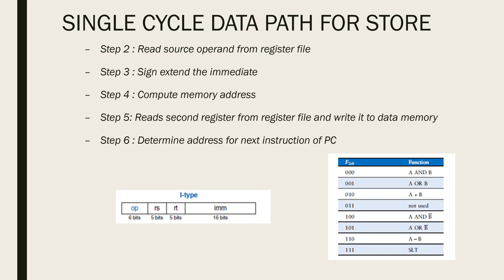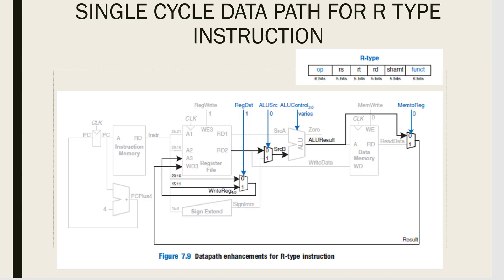Now we are looking at the steps involved during single cycle data path designing for a store instruction. Step 5 will be the extra step that comes in when you compare it with the load instruction. We have also added the general format for an I-type instruction and the truth table for an ALU 3-bit. Now we'll try to derive the single cycle data path for your R-type instruction from the design of the store instruction.